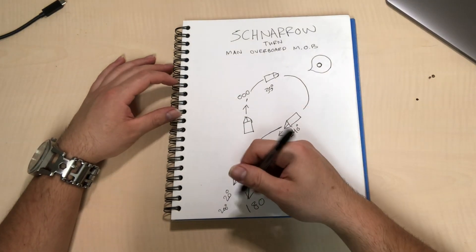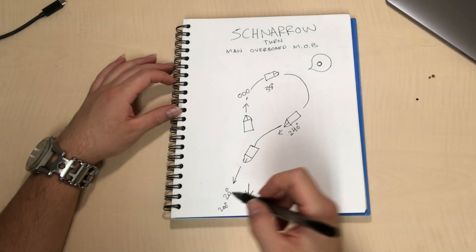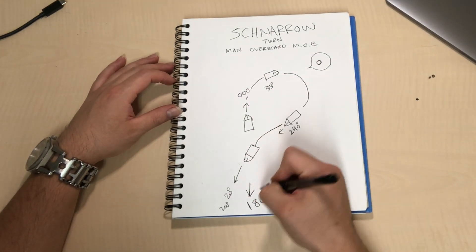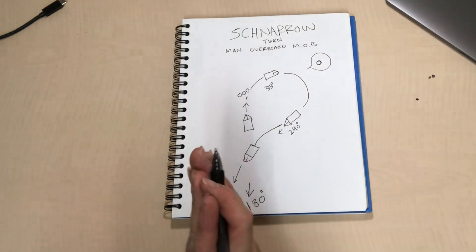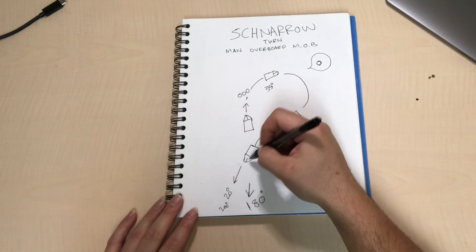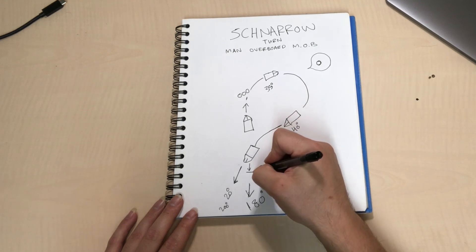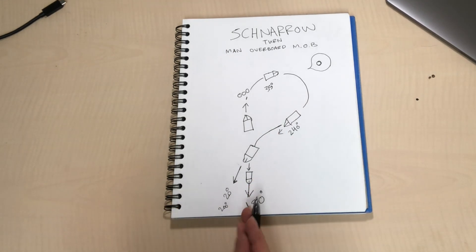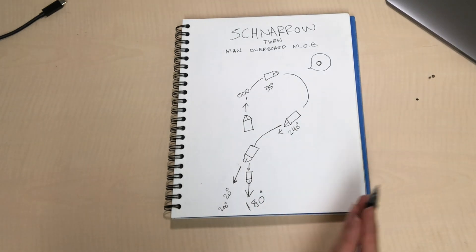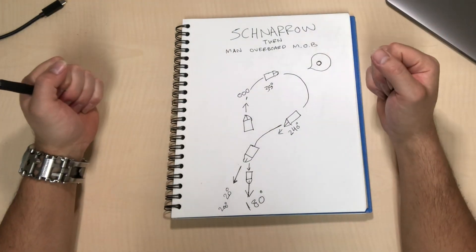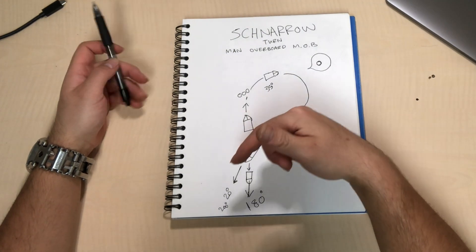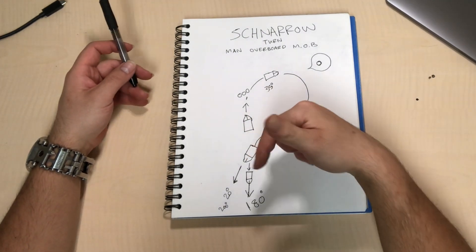Yeah, same thing as a Williamson turn. So when you're 20 degrees from your reciprocal course, you're gonna go midship, which is zero rudder left or right. And hypothetically that will then balance the swing out to around your reciprocal course. Now when I did my Williamson turn, I really did practice that. I'm 20 degrees from the original course, I went midship, and the rate of turn of the ship really did come to a stop close to the reciprocal course.